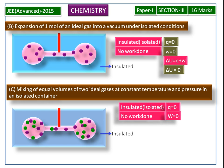Because of the isolated condition, Q is equal to 0 and no work is done, so W is equal to 0. According to the first law of thermodynamics, delta U is equal to Q plus W. Substituting the Q and W values, we get delta U is equal to 0. For the C process, the answers are Q is equal to 0, W is equal to 0, and delta U is equal to 0.